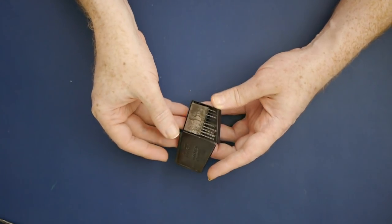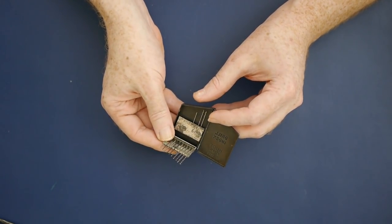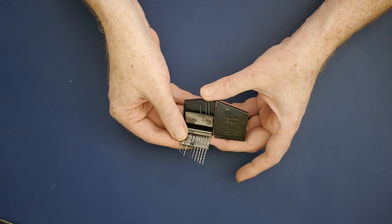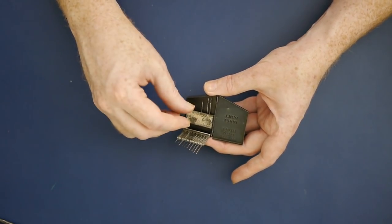Finally, a set of tiny drill bits in their original case. The diameters are from number 80 to number 61, all less than a millimeter.